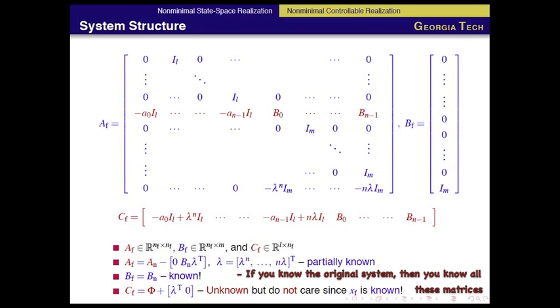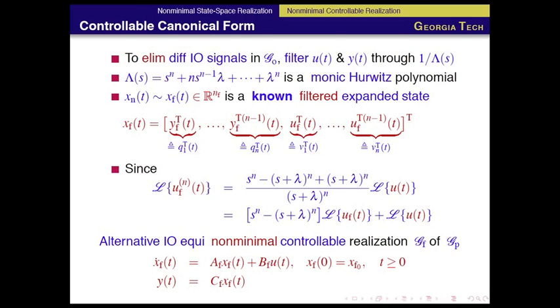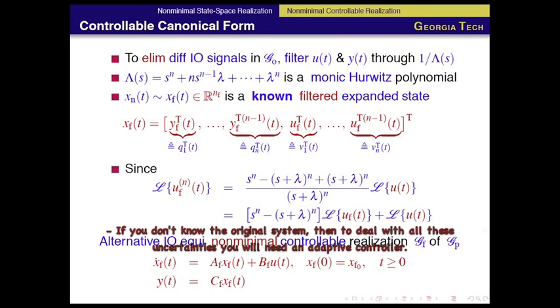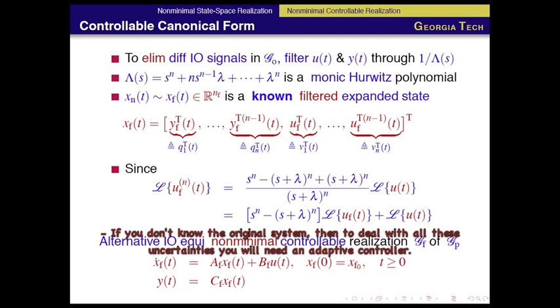Here, Cf is unknown, but we do not care because now we are not going to do output feedback. We converted an output feedback problem to state feedback. I will just use the control from here. I know this state, I am going to use this state, and I will only design an adaptive controller for that system.